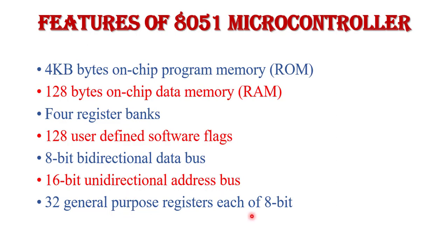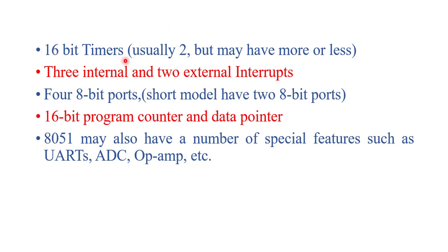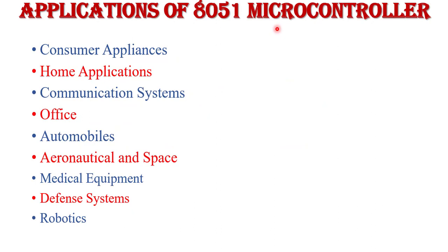The 8051 also has 32 general-purpose registers each of 8-bit, two 16-bit timers, 3 internal and 2 external interrupts, a 16-bit program counter and data pointer. The 8051 may also have special features such as UARTs, analog-to-digital converters, op-amps, etc. These are the key features of the 8051 microcontroller.